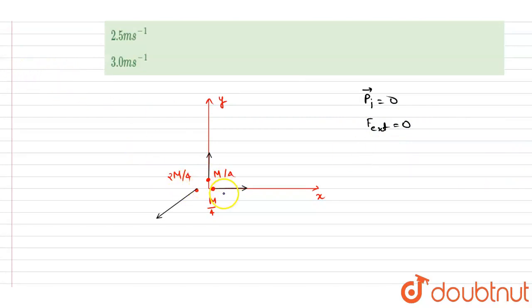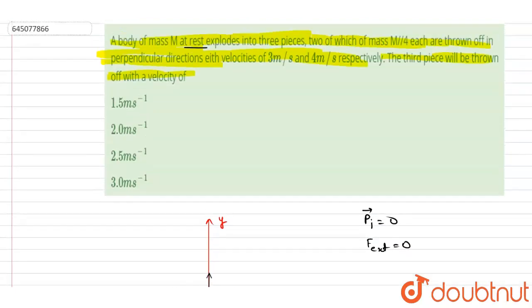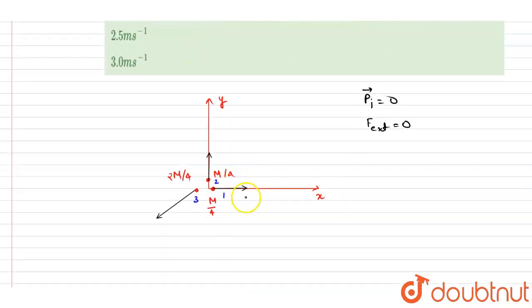Right, so if I say these three are having velocity, if you see the first one is having velocity 3 meters per second, and this is having velocity 4 meters per second, and let's say it is having velocity v naught.